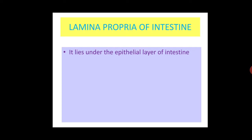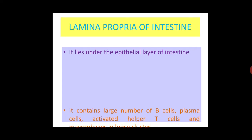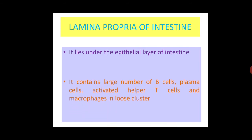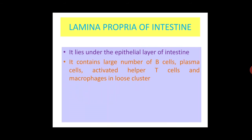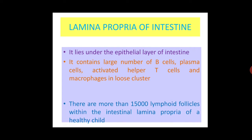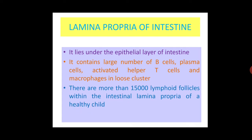Lamina propria of the intestine is an example of unorganized mucosal associated lymphoid tissue. It lies under the epithelial layer of the intestine and contains large numbers of B cells, plasma cells, activated helper T cells and macrophages in loose clusters. There are more than 15,000 lymphoid follicles within the intestinal lamina propria of a healthy child.